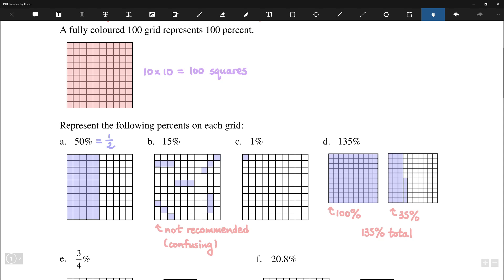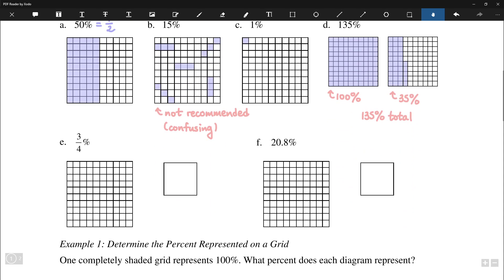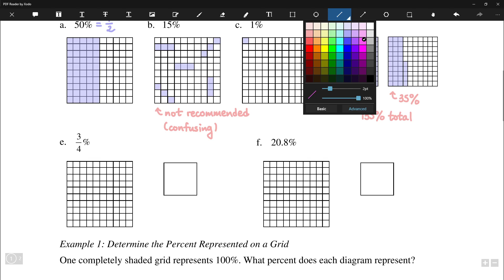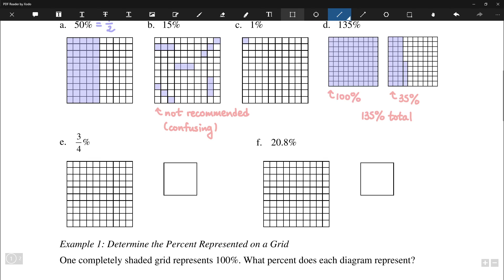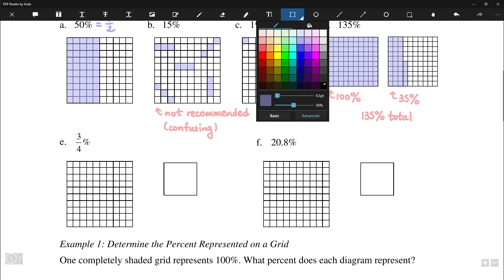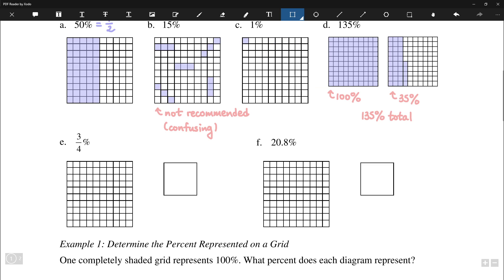We can also have a fraction or decimal of a percent. So for example, we have 3 quarters of a percent. So it might look something like this. Let's go ahead and fill in 3 quarters of a single square.